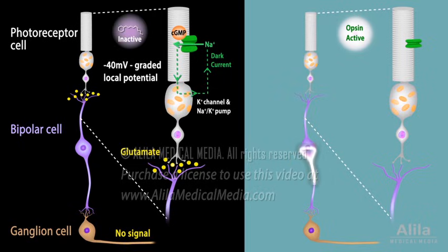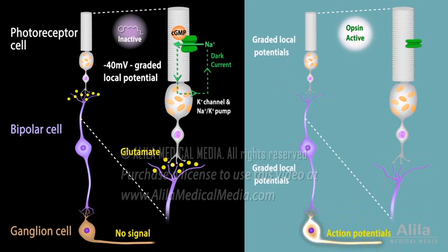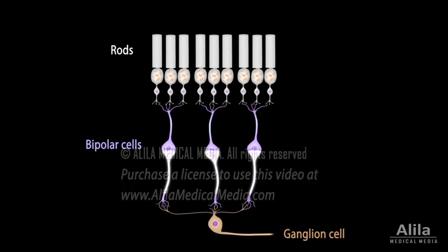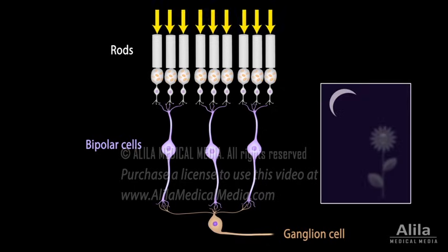The information is then transmitted to ganglion cells, the only cells within the retina that generate action potentials and send them to the brain. On average, each ganglion cell receives signals from over a hundred rods. This degree of convergence is the basis of the high sensitivity of rod cells. A dim light produces only a weak signal in a rod, but together, hundreds of these signals converge and become one strong signal acting on a single ganglion cell.